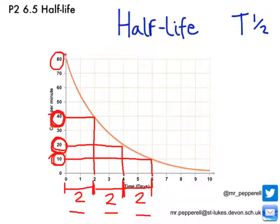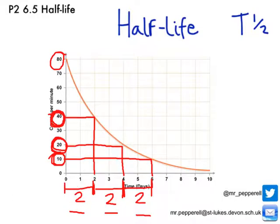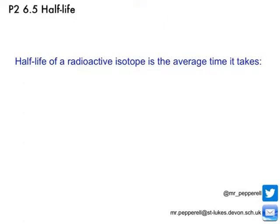The half-life is the amount of time it takes for the count rate to half. You'll sometimes see it written as T½ — that's just 'time a half'. It's always the same — it's always two days. It doesn't matter what the count rate is when you start looking; after this two-day period it's always going to have halved. So that's what the half-life is.